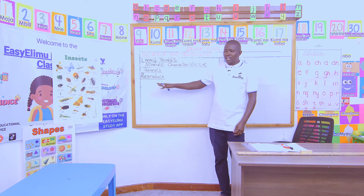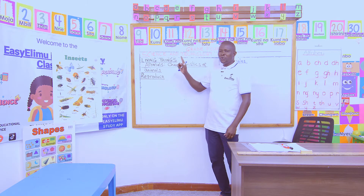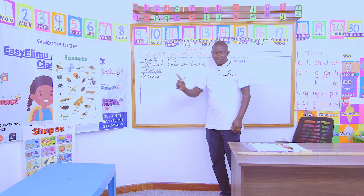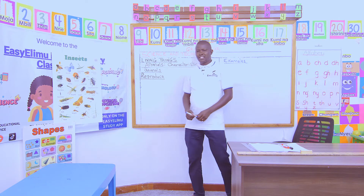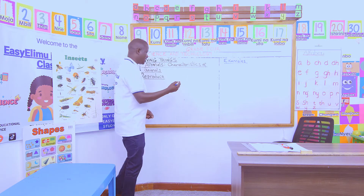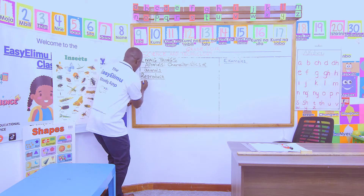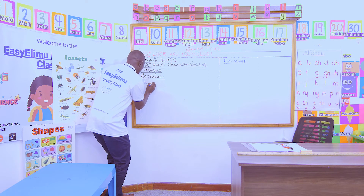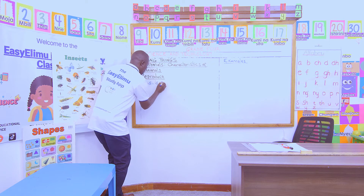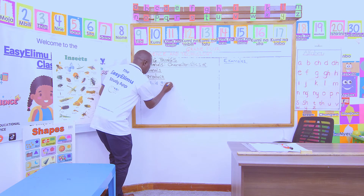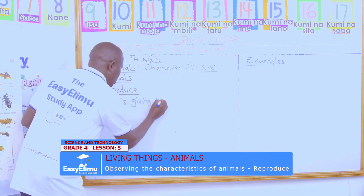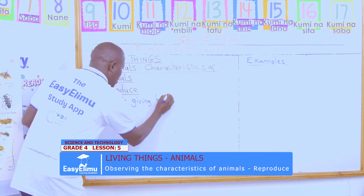Today I want us to look at this characteristic we call reproduce. Reproduce — in other words, we say it is giving birth to a young one. This is giving birth to a young one.